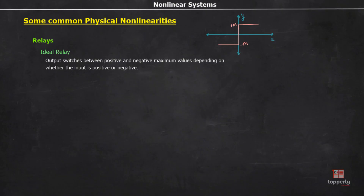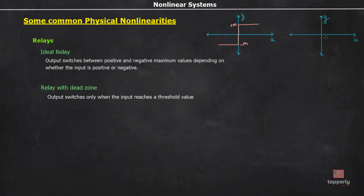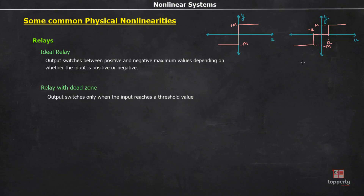Coming to the next type of relay — relay with dead zone. In this case, the output switches only after the input has increased beyond a threshold value. Drawing the characteristics, the output will be zero until the threshold value, let's say the threshold value is A, is reached. And after that, it switches to the positive M value. Similarly, in the negative case, the output will be zero until it reaches the threshold value of minus A, and after that the output is minus M.